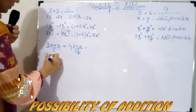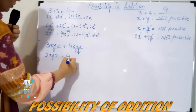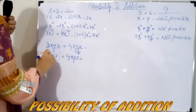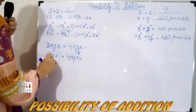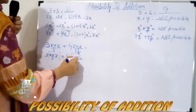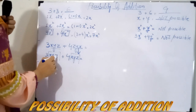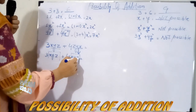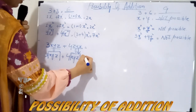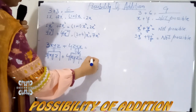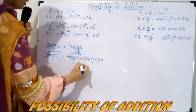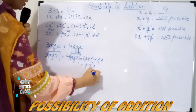We have two terms: 4xyz and 3xyz. Rearranging alphabetically: 4xyz and 3xyz. Now match the variables — x with power 1, y with power 1, z with power 1 in the first term; x with power 1, y with power 1, z with power 1 in the second. All three variables have the same power, so this part is the same. Simply add their coefficients: 3 plus 4, and the answer is 7xyz.